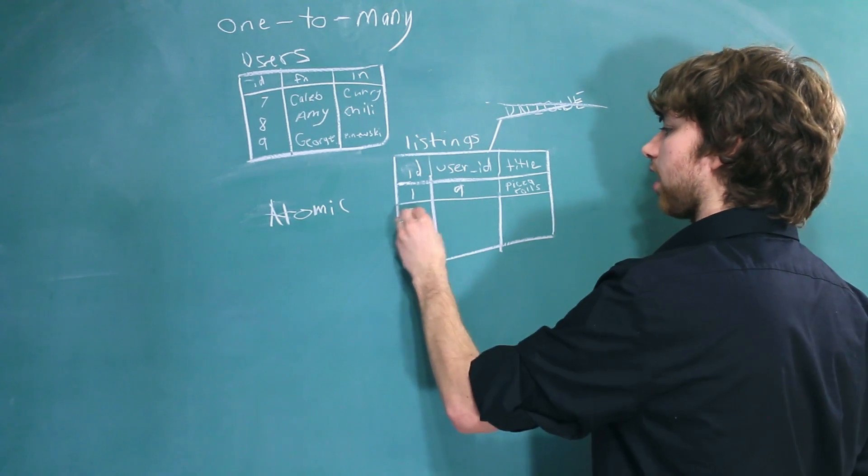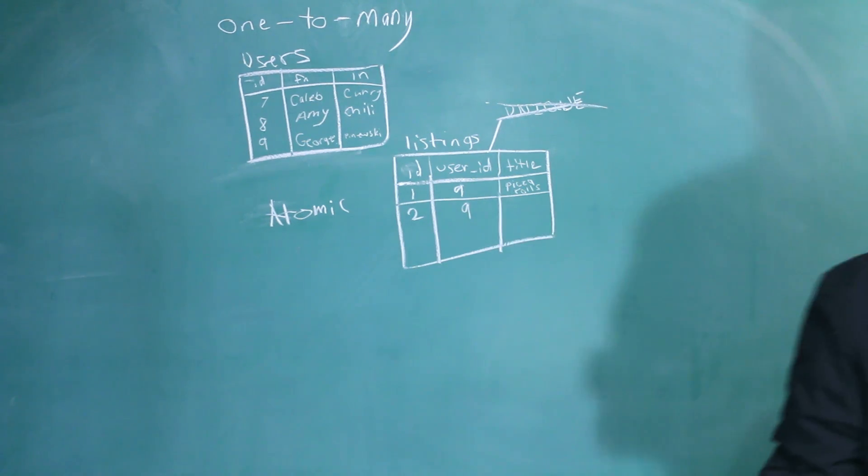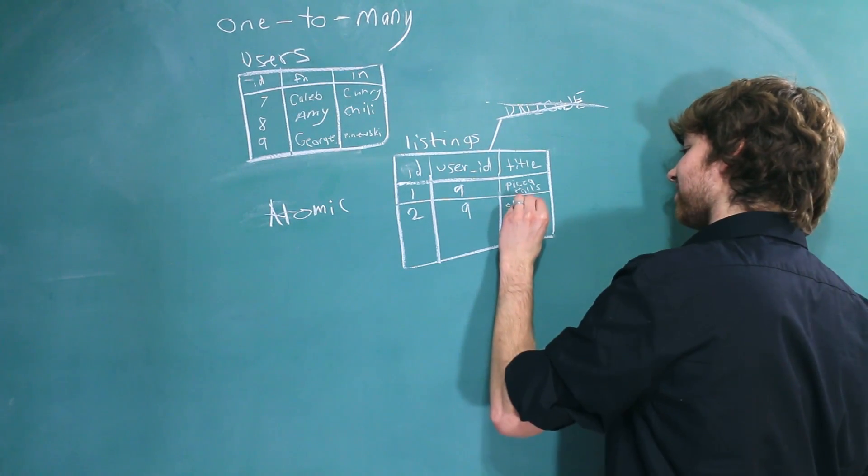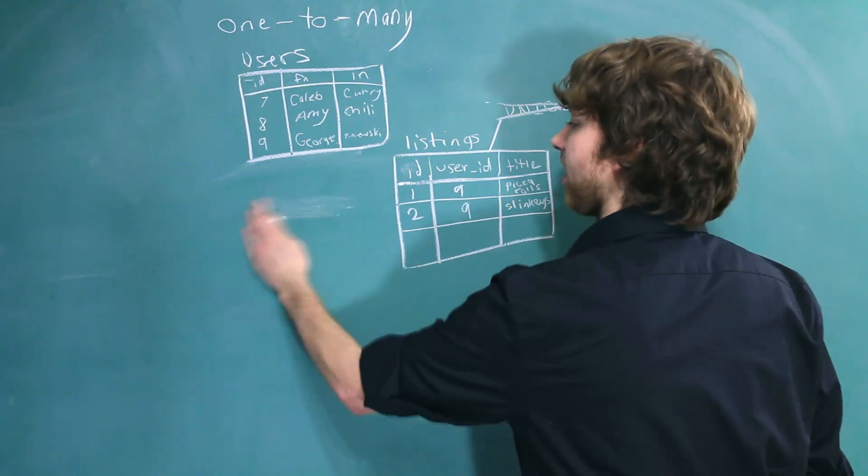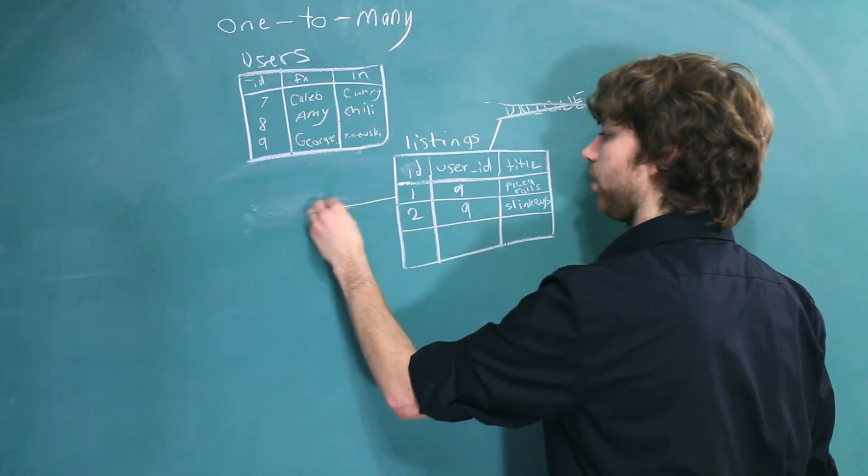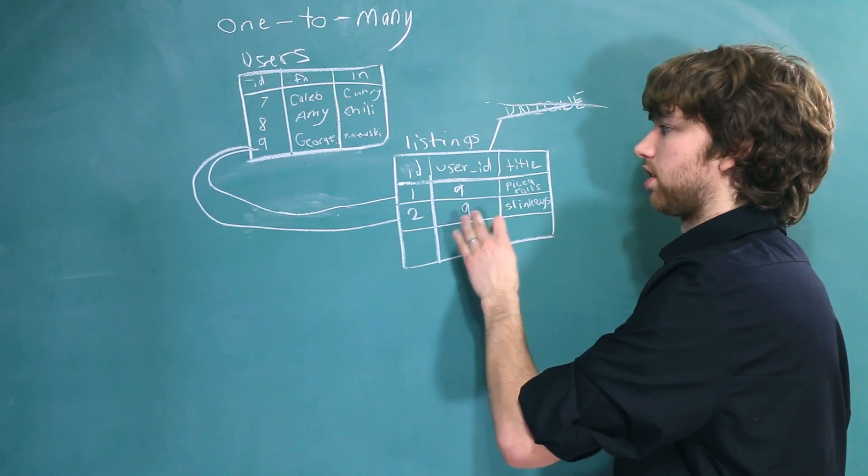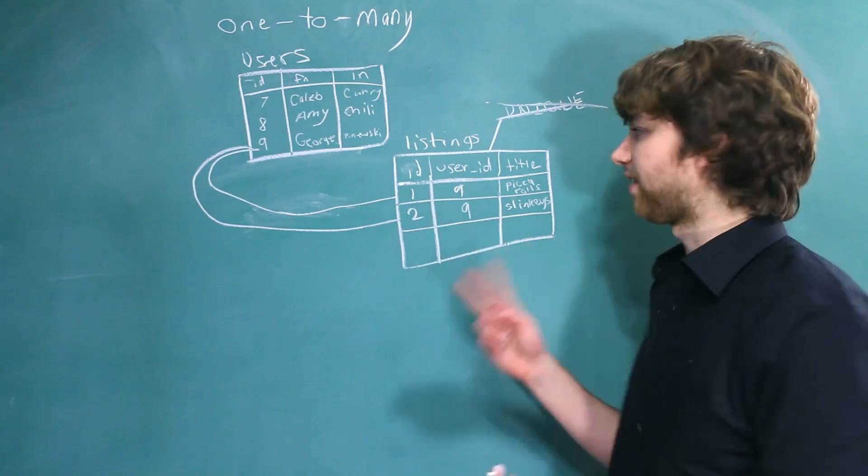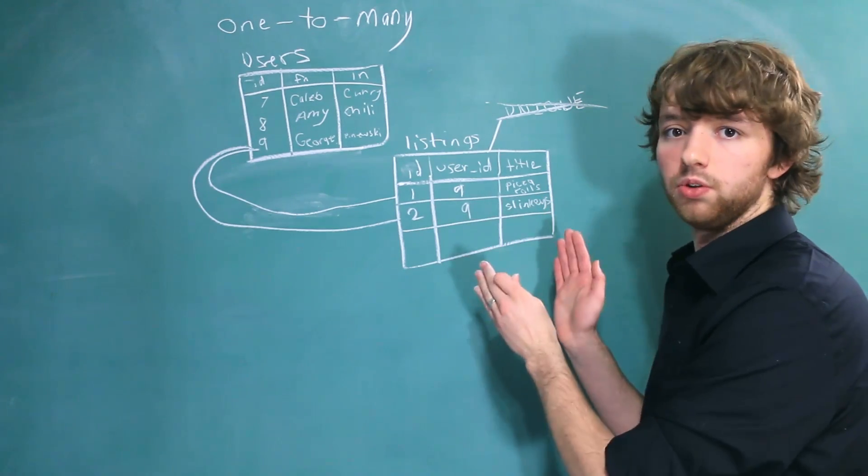Now we can have another item by the same person, and we can say this is... Give me a weird item, hurry! Slinkies! I don't know how to spell Slinkies. Now you can see we have two rows that point to one user, but we don't have any rows that point to two users. In fact, it's not even possible with this setup if we're following our atomic rules.